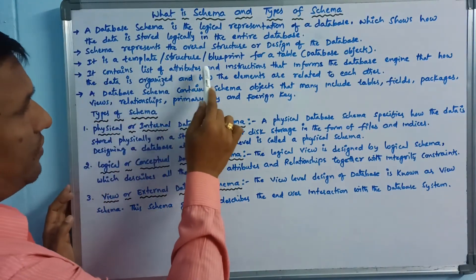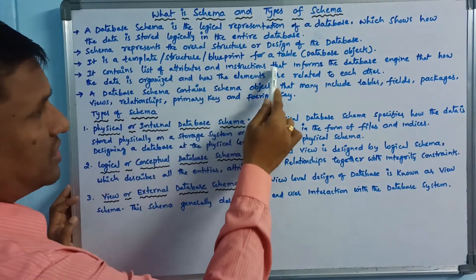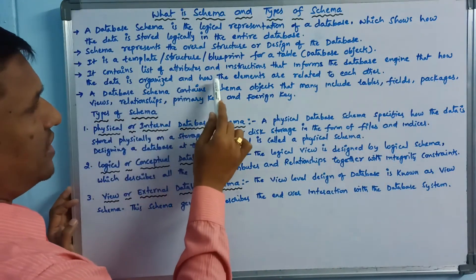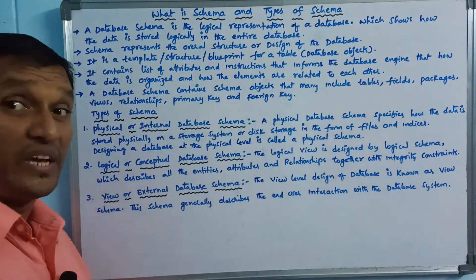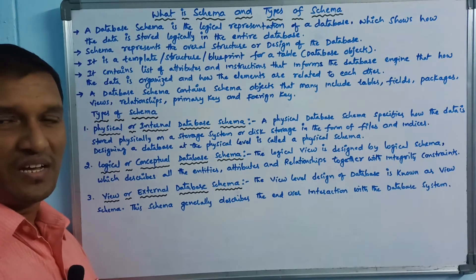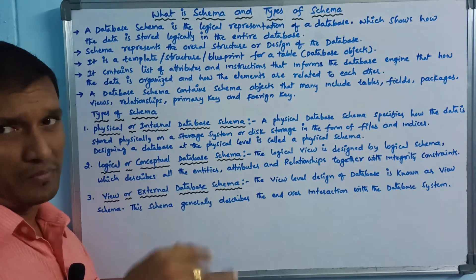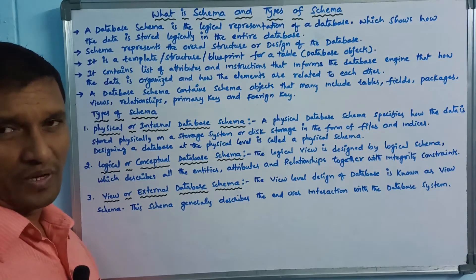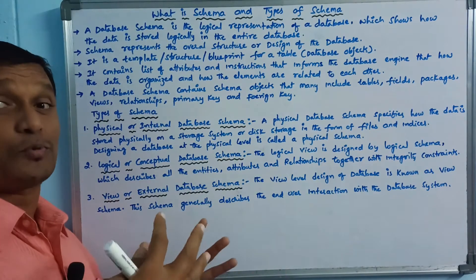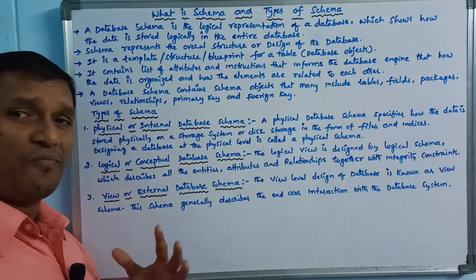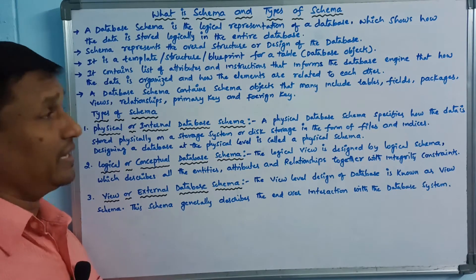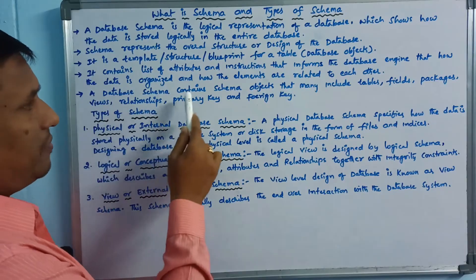It contains a list of attributes and instructions that inform the database engine how the data is organized and how the elements are related to each other. The database has data storage and attributes such as column names. One table in the database and another table in the database are related through relationships. This is the information that explains the schema.